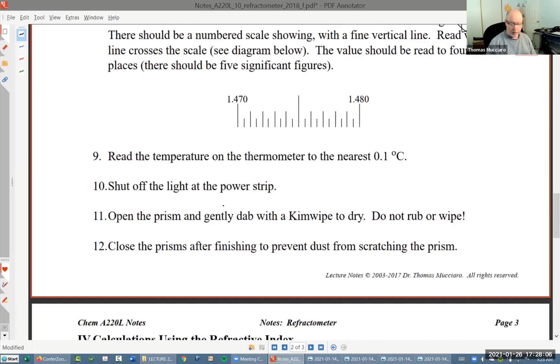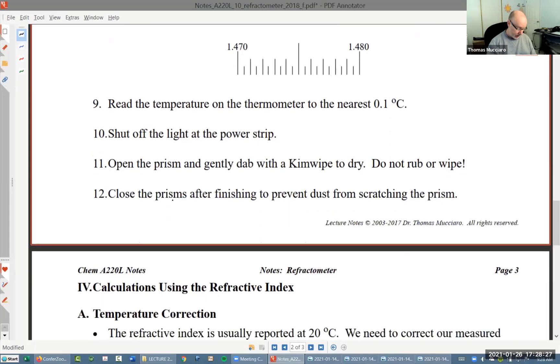And then just really quickly to clean this thing. What we want to do is we want to take a relatively soft paper cloth. Usually we use something called a Kim wipe. And we want to just push down, soak up the liquid, lift it off, let the rest evaporate. We don't want to wipe it because it'll scratch the prism.